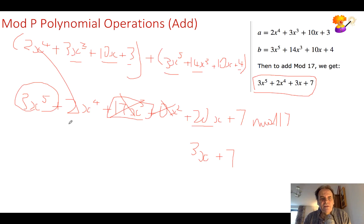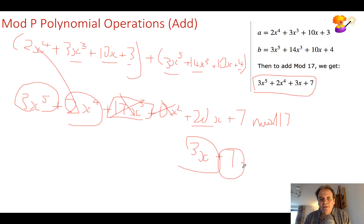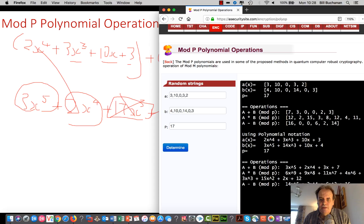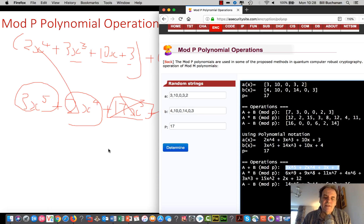So we get for the add operation: 3x to the power of 5, plus 2x to the power of 4, plus 3x plus 7. This shows us that we have the right answer when we add a and b and then take mod p, which is 17 in this case.